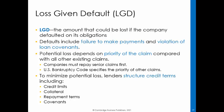When a company defaults on its obligations, creditors seek to claim the remaining assets owed. A creditor's potential loss depends on the priority of the claim compared with all other existing claims. Laws and private contracts determine the order of repayment. Companies must repay senior claims first, and the US bankruptcy code specifies the priority of other claims. If a company is in default, it is likely that it is fully drawn on lines of credit, meaning it has no other means to raise additional cash.